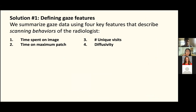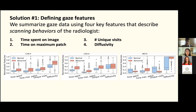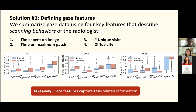Our first solution to summarizing gaze data was to survey lots of different gaze features. We found four key features describing scanning behaviors related to the task: how long the radiologist spent on the image, how long they spent in a specific location, how many different locations they visited, and how diffuse those locations were across the image. These four gaze features exhibited different class-conditional distributions — for example, the time spent for normal versus abnormal was shifted — indicating task-embedded information.